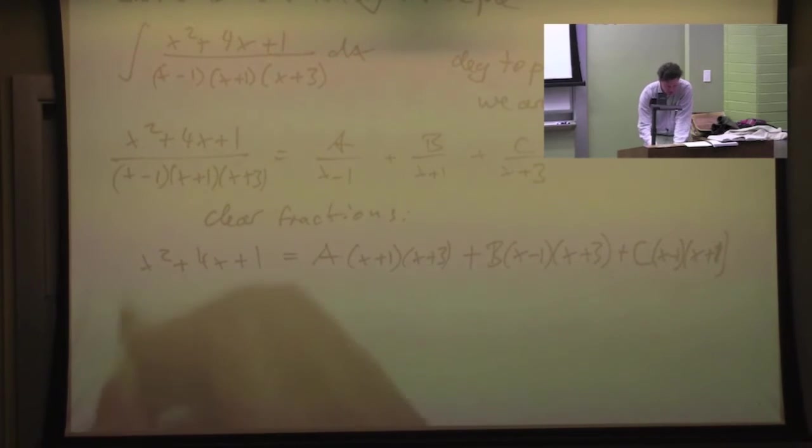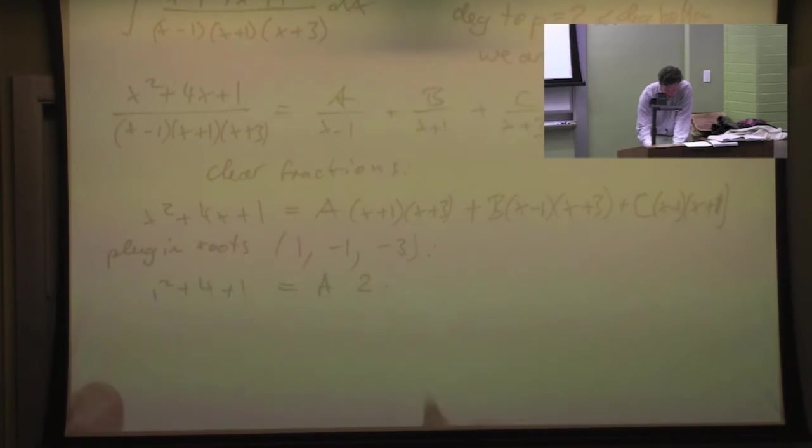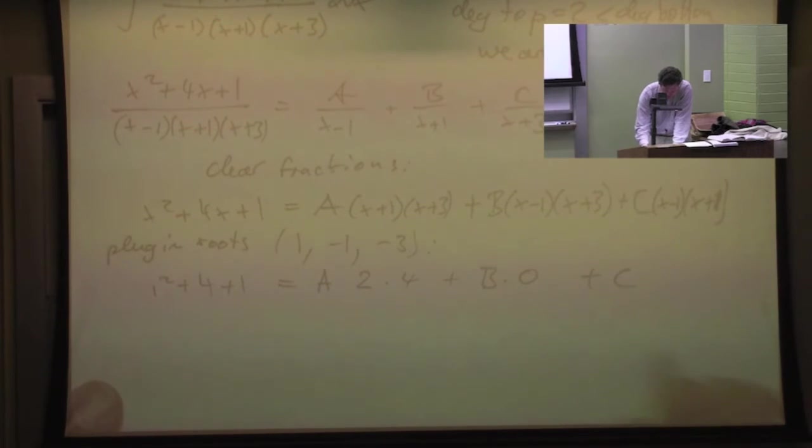Okay, we're going to first do the plug in the roots. Now the roots are, by the way, 1, minus 1, and minus 3. So if you plug in 1, you get 1 squared plus 4 plus 1 equals A times 2 times 4 plus B times 0 plus C times 0.